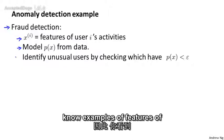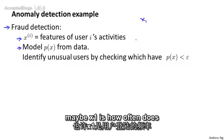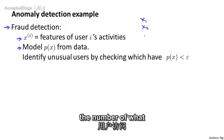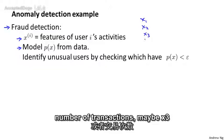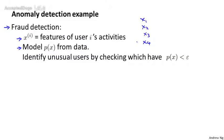So examples of features of a user's activity may be on the website, it'd be things like maybe X1 is how often does this user log in? X2 may be the number of web pages visited or the number of transactions. Maybe X3 is the number of posts of the users on the forum.